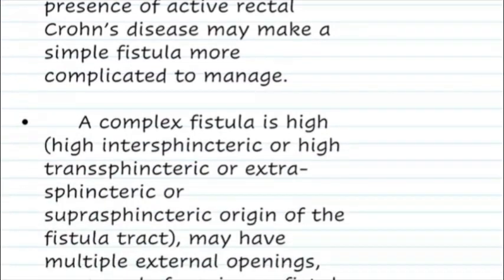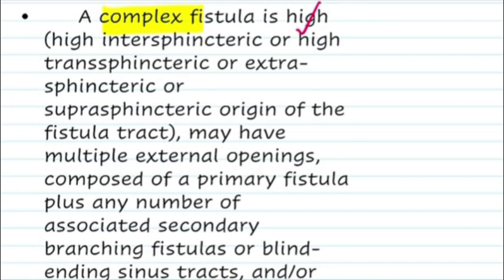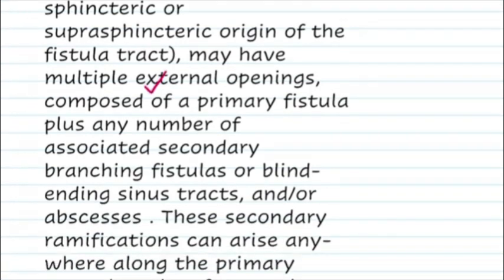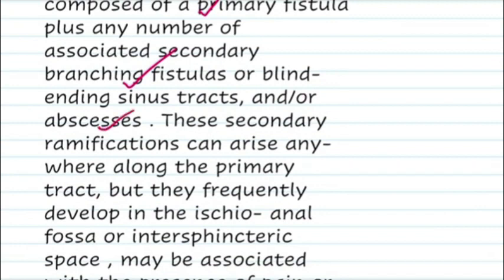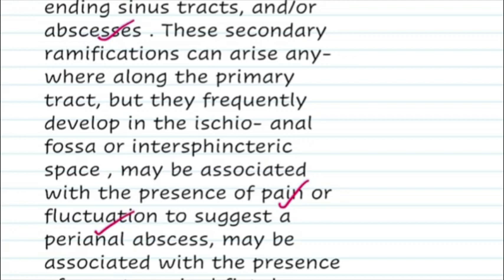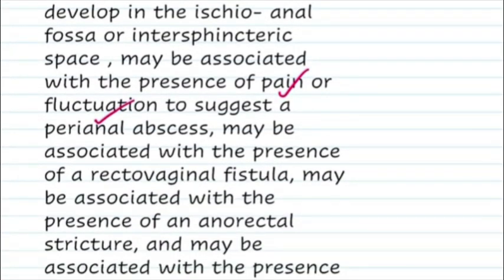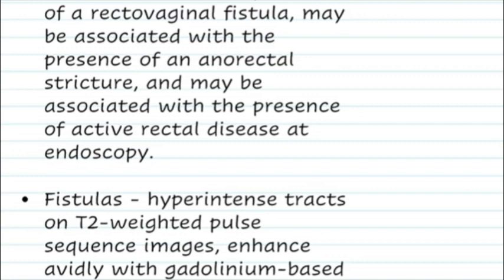A complex fistula is one which is high — that can be high intersphincteric, high transsphincteric, extrasphincteric, or suprasphincteric in origin. It may have multiple external openings, composed of a primary fistula plus associated secondary branching fistulas or blind-ending sinus tracts and abscesses. When the patient presents with pain and fluctuation suggesting perianal abscesses, this indicates the fistula is of a complex variety.